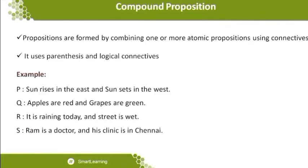Compound proposition statements are formed by combining atomic statements using logical connectives. Propositions are formed by combining one or more atomic propositions using connectives — that connectivity is very important, made using logical symbols. For example: 'Sun rises in the east and sun sets in the west' — two atomic statements connected. 'Sun rises in the east' taken as p, 'Sun sets in the west' as q, written as p AND q.